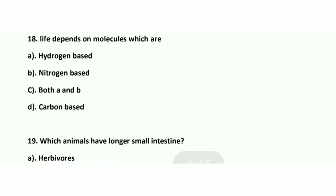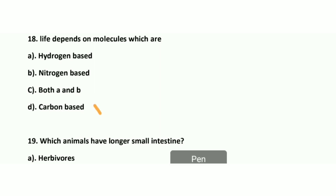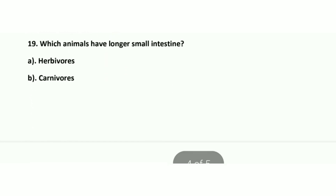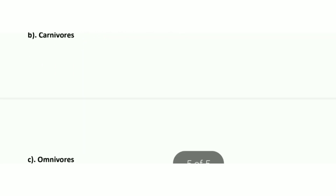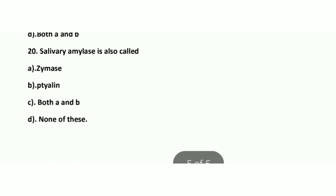Question number 18: Life depends on molecules which are — the right answer is Option D: carbon-based. Question number 19: Which animals have a longer small intestine? Herbivores are the animals which have a longer small intestine, because they have to digest cellulose.